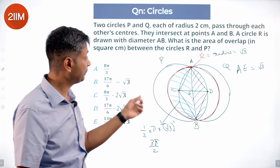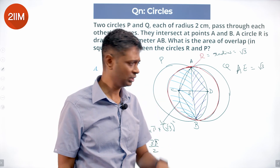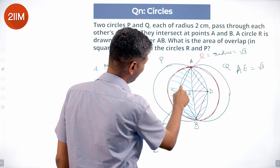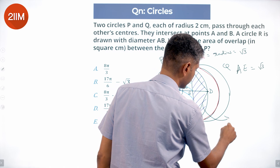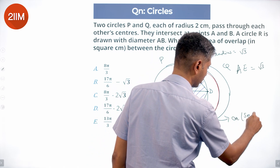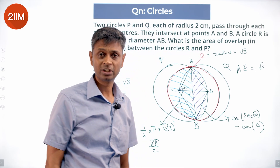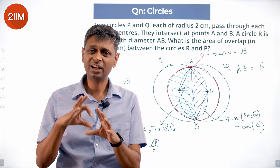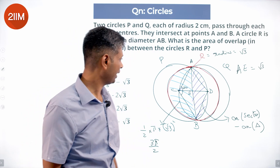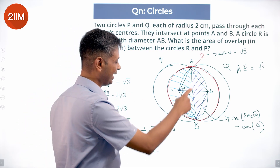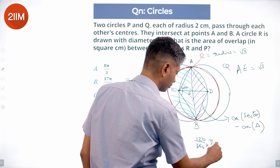The purple area is a segment of P — the part of P which also lies inside R. The central angle here is 120°. The segment area equals area of sector minus area of triangle. Area of sector = (120/360) × π × 2² , with radius 2 and angle 120°.